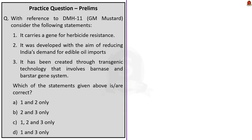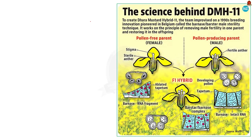Moving to the next question. Three statements have been given and we are asked to choose the correct statement about DMH-11. The full form of DMH is Dhara Mustard Hybrid. It is the second genetically modified crop approved for release into the environment for seed production and testing. GM cotton is the first in the list and is currently commercially used in India.